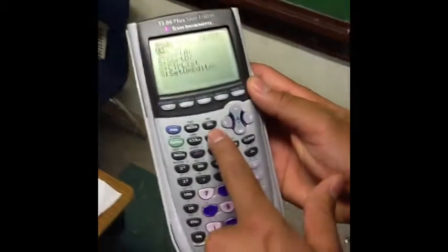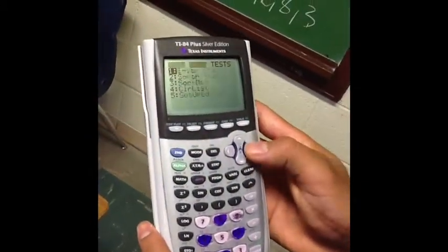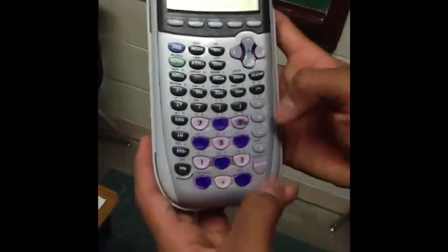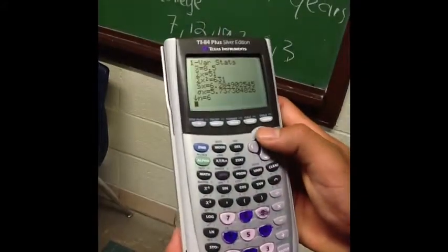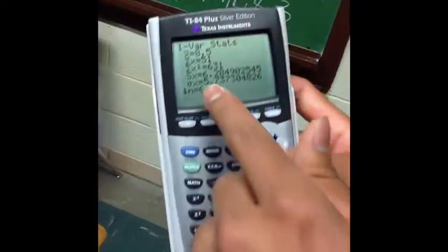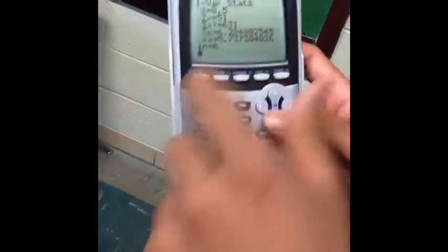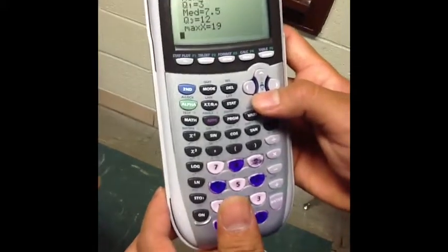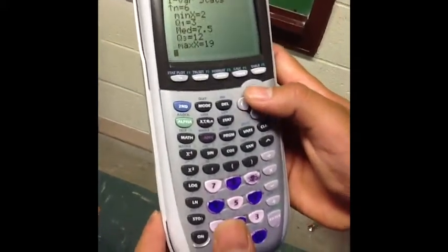The second step is you push second, mode, stat one. You put the calculator here and then you hit enter and enter two times and then we have the median that is over here, eight point five.